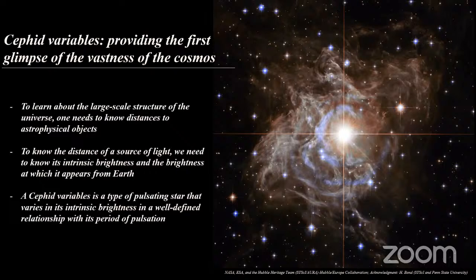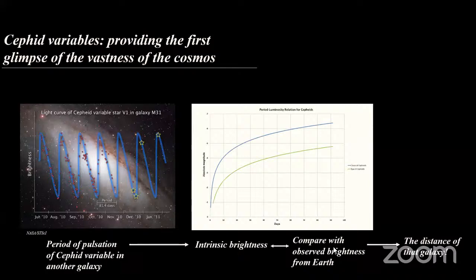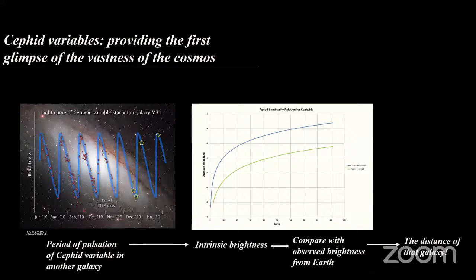Cepheid variables — from the name — are variable stars. Their brightness changes with time in a periodic fashion. What makes these stars very special is that there is a special relationship between their period of pulsation and their intrinsic brightness. The difference between intrinsic brightness and the brightness that we see: a very bright star in the sky could mean the star itself is very bright but far away, or that the star is not very bright but very, very close.